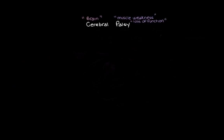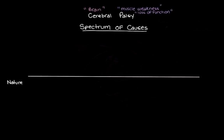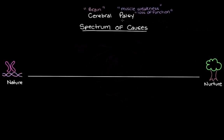Let's go back to those damaging events that cause cerebral palsy by making a spectrum of causes. This spectrum goes from nature on one end to nurture on the other. Nature refers to things we're born with — things that are innate, like our genes or chromosomes. Nurture refers to our environment after we're born — all of our personal experiences. Different causes of cerebral palsy can happen at different periods of early development. We'll color code them: blue for before birth (prenatally), green for during the birth process (perinatally), and salmon for after birth up to the first few years of life (postnatally).